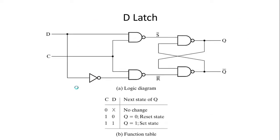The truth table or function table is pretty simple — there is only one input D and a clock bit. If clock is 1, it enables the latch. For the set state where D is 1, the D input goes in as 1 and the NOT gate produces 0.